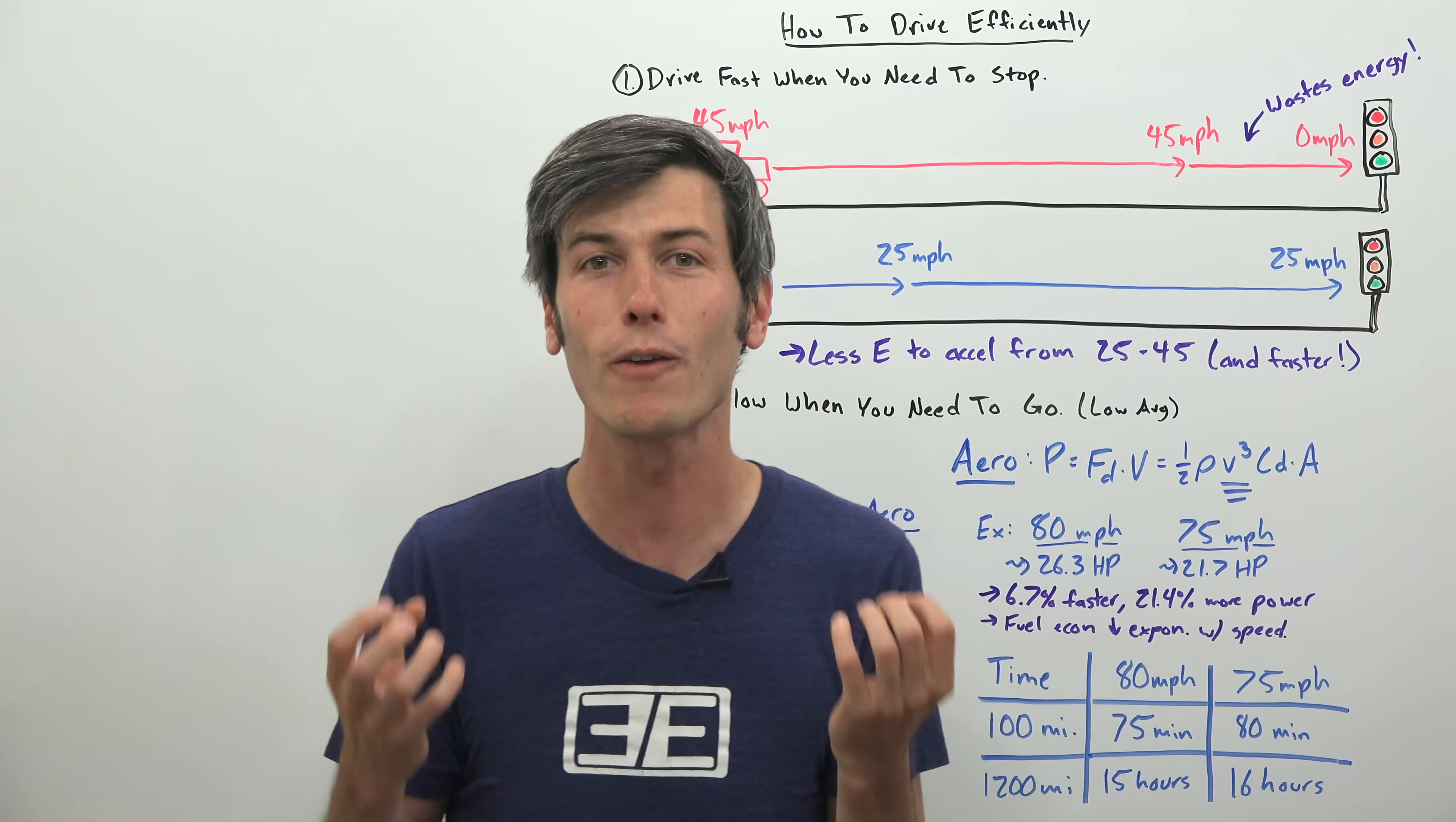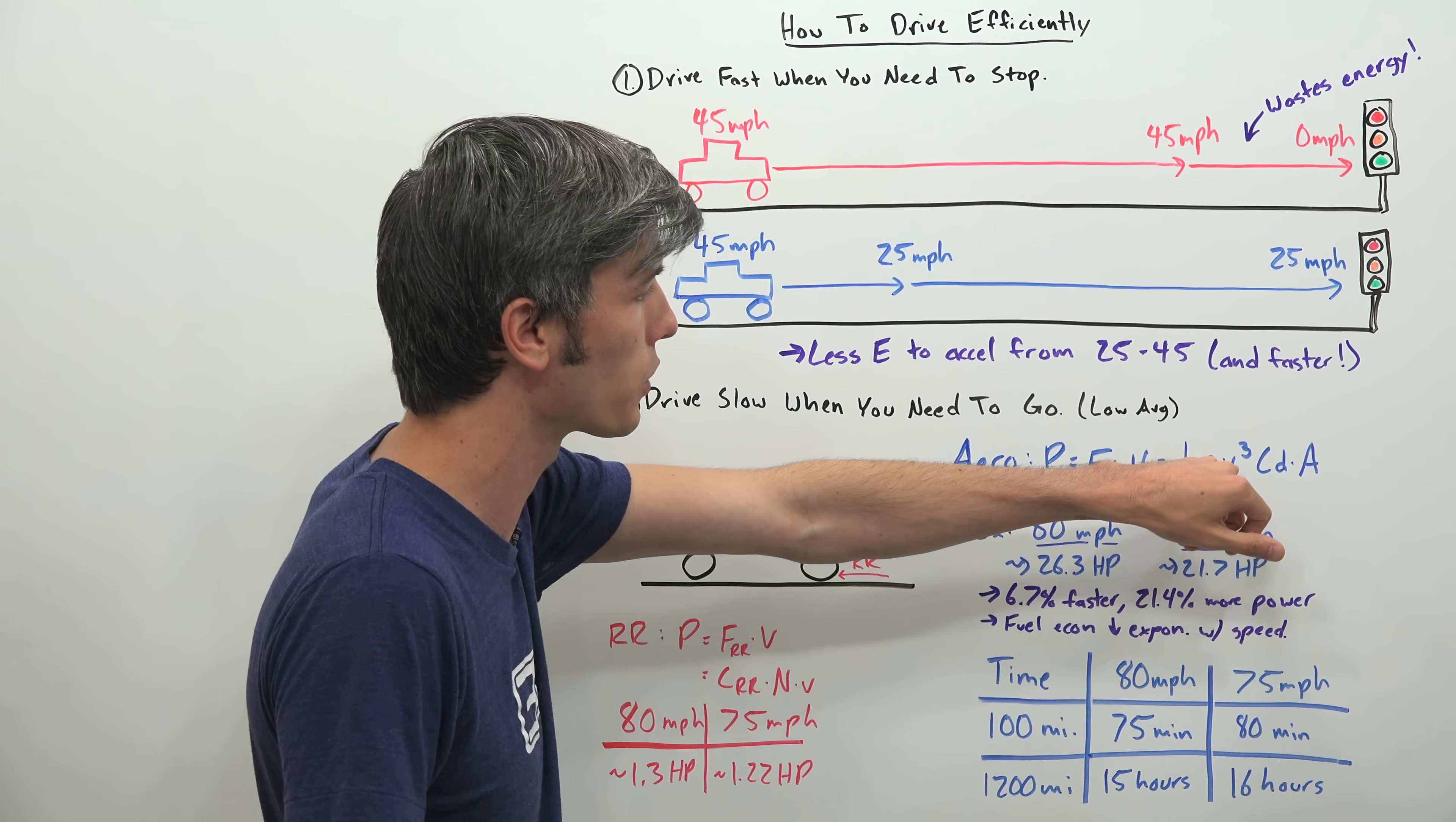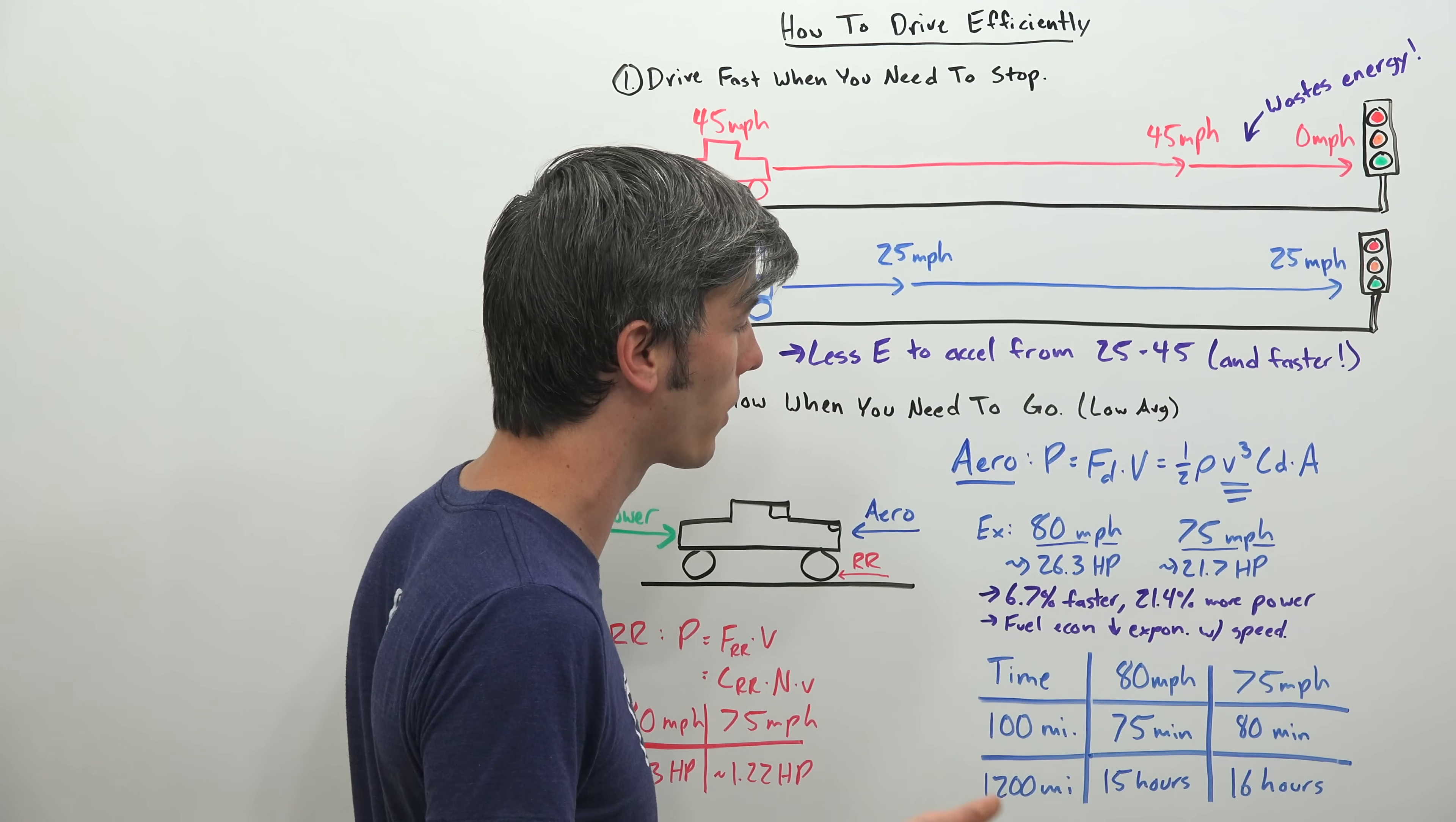What does all this mean? Well, it means that the amount of power you need to produce increases exponentially as your speed increases because the aerodynamic power required is a function of velocity cubed. And so this is just a simple illustration here. If we were to plug in some numbers here for the same vehicle traveling at 80 miles per hour versus 75 miles per hour.